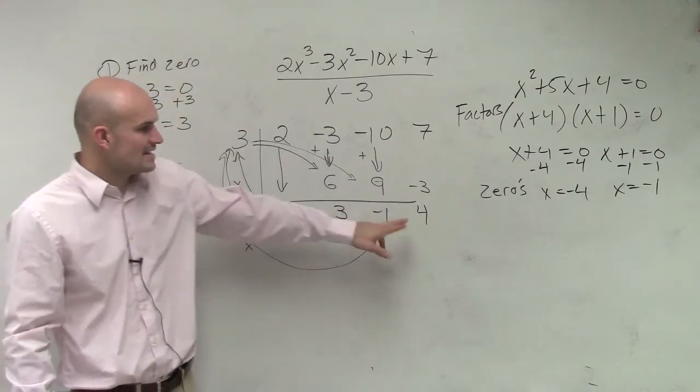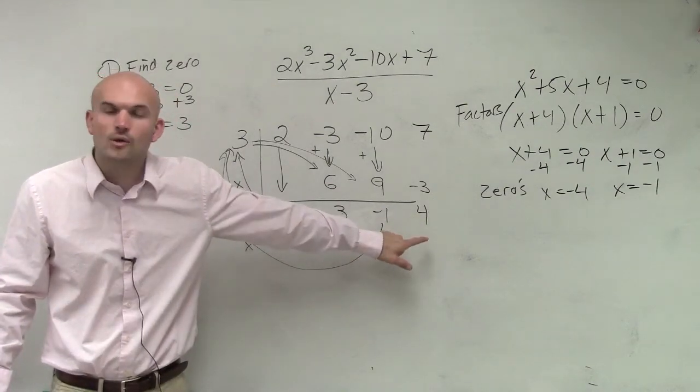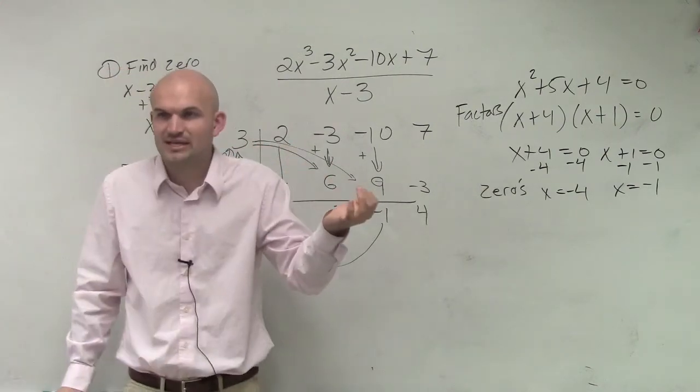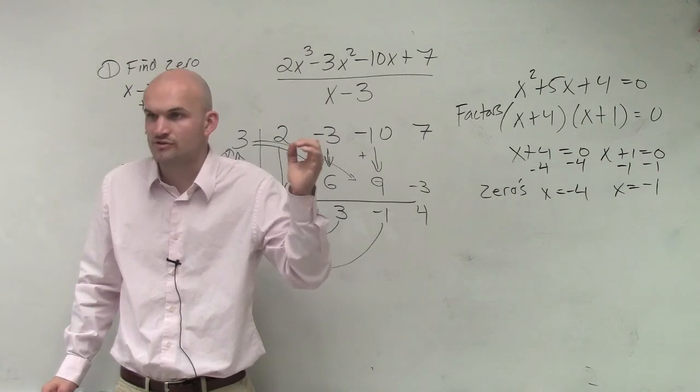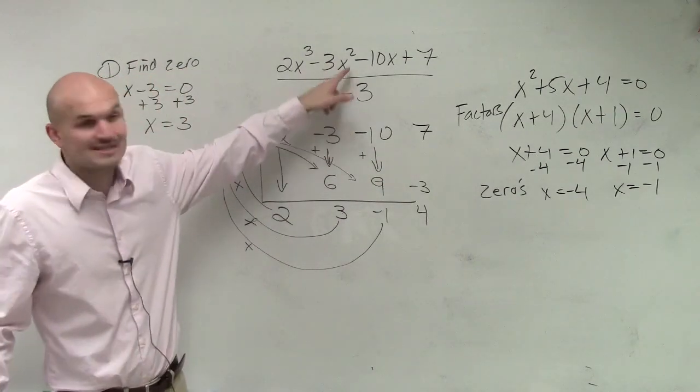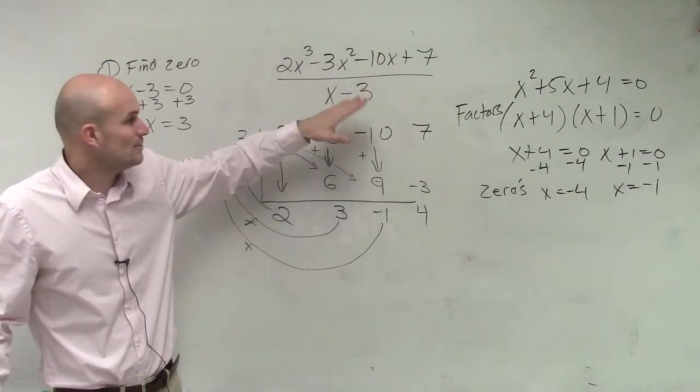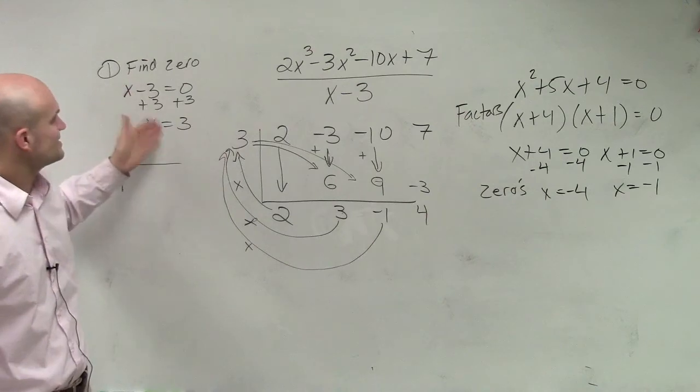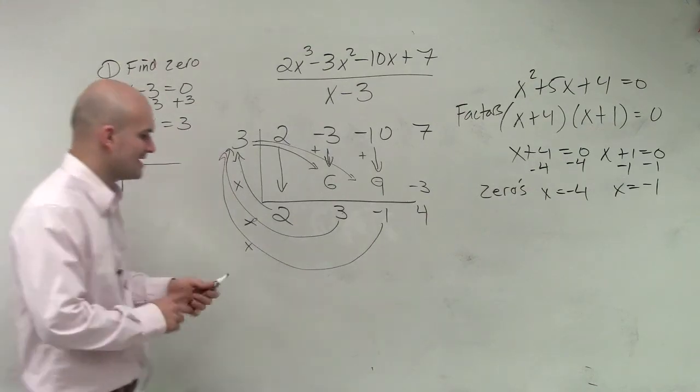Now, since what we have, if we have a 0 at the end, that means we have a remainder of 0. So, if there's a remainder, does something divide into something evenly if there's a remainder? No. So, therefore, x minus 3 does not divide into this. So, can we say x minus 3 is a factor of it? No. Therefore, this is not a zero of the polynomial.